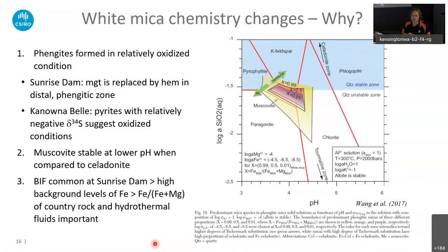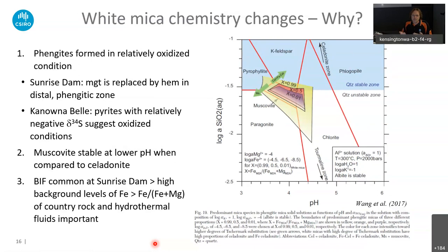Ray noticed that at Sunrise Dam, magnetite is replaced by hematite in the zone distal to the ore — and that's the phengitic zone, which makes sense as it's an oxidized environment. Ray also did some sulfur isotope studies comparing them with white mica composition, and again he found that more oxidized environments correlate with different white mica compositions.